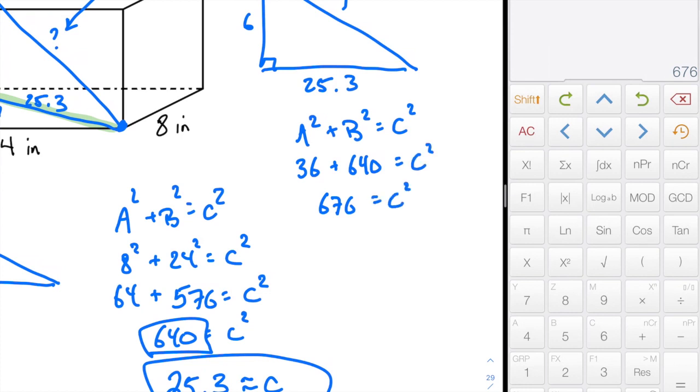And now I'm going to square root both sides to get rid of the square. So square root of 676 is, oh, 26, nice even number. So because I don't have to round it, I'm going to say it's exactly equal to C. So then 26 inches is the maximum umbrella.